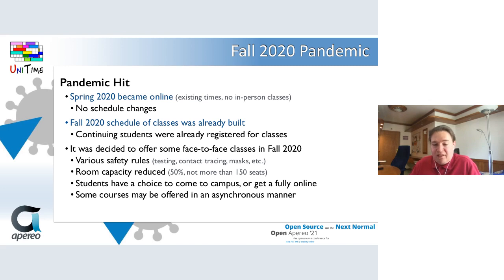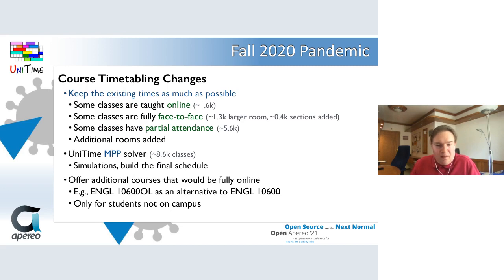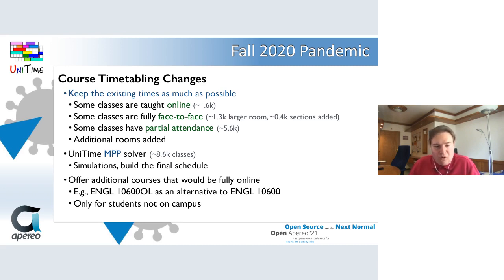Students were given the choice to come to campus for some face-to-face classes, or stay at home for a fully online schedule. International students who were not allowed to come to the US meant that many courses had to offer sections taught asynchronously, not requiring students to be available for an online meeting at a specific time. For fall 2020 course timetabling, it was decided to keep existing times as much as possible. For each class there would be a choice: some classes would be fully online and need no room; some would be fully face-to-face, needing a bigger room or additional sections.